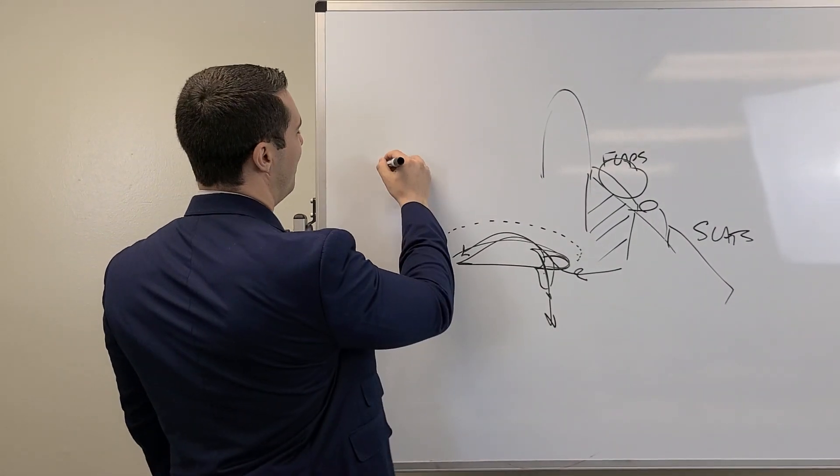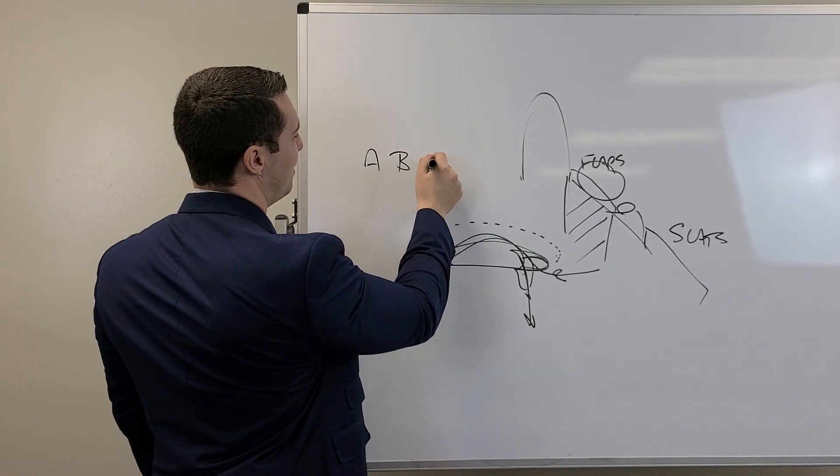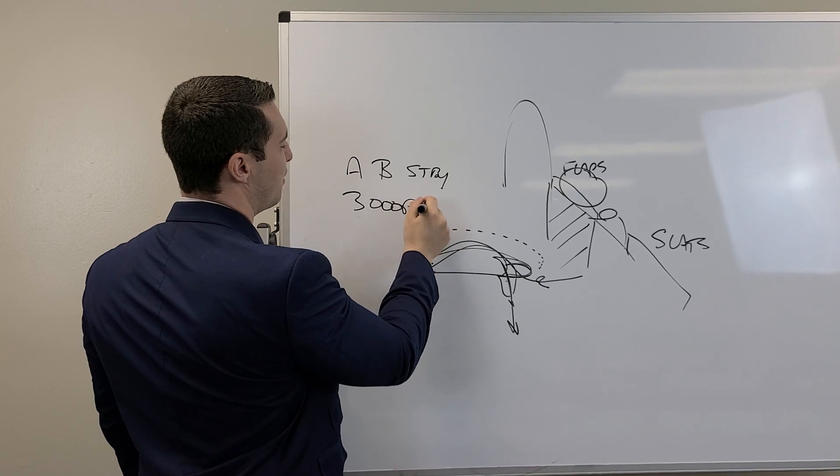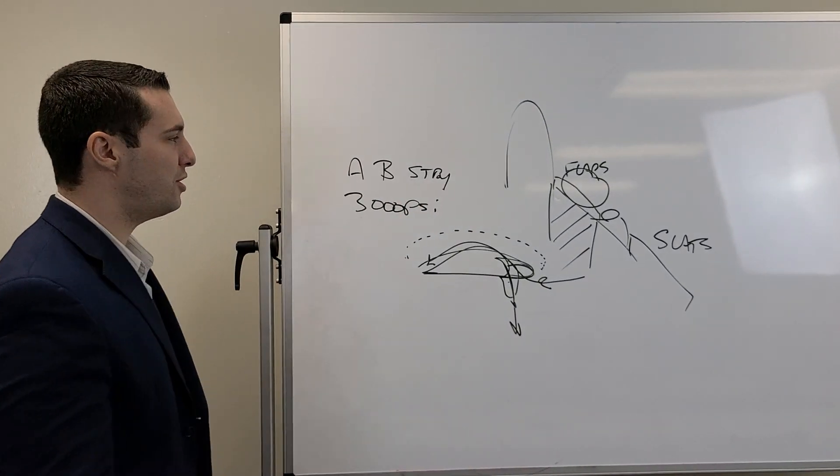Remember, we have a hydraulic system. We have system A, we have system B, and we have the standby, all of which are providing 3,000 pounds per square inch, 3,000 psi worth of pressure.